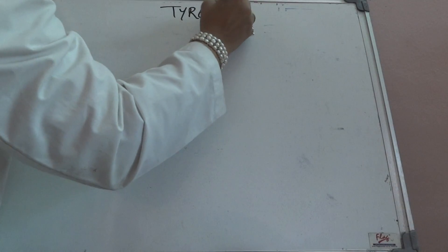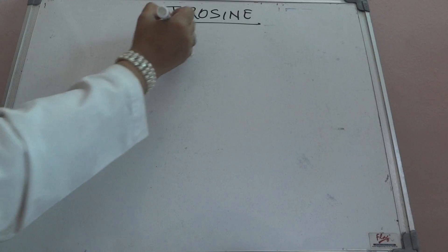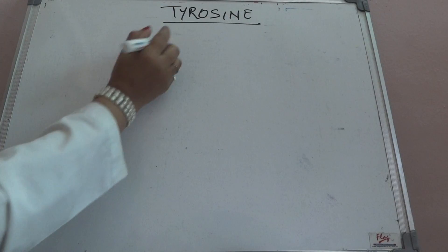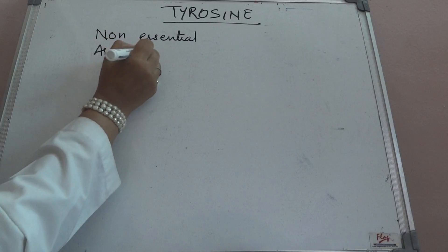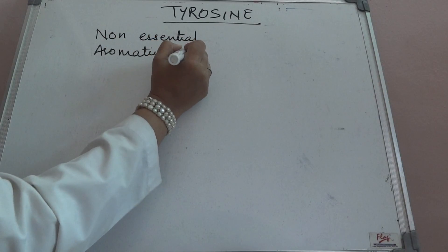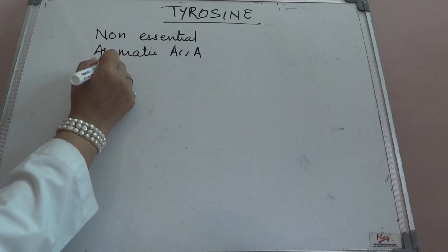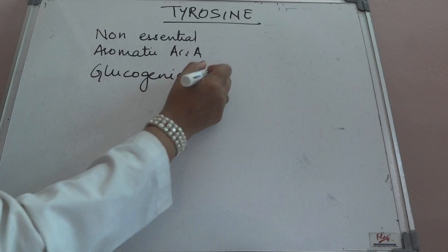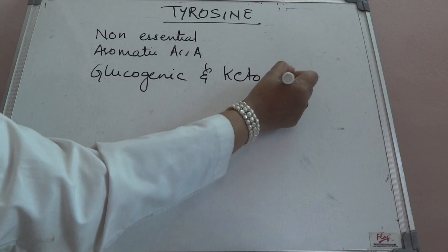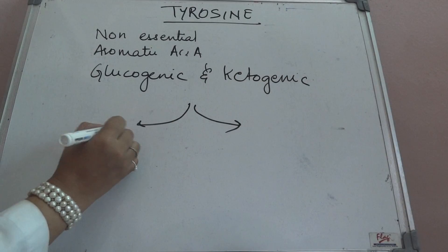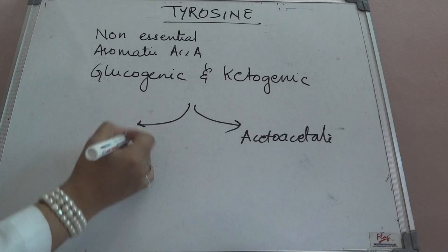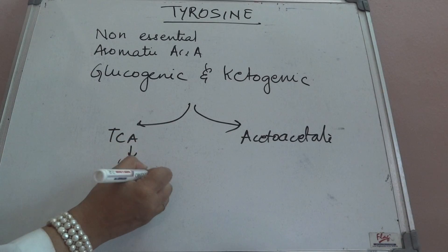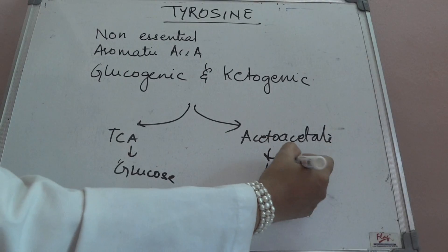Hi everybody, today we discuss tyrosine metabolism. We have already discussed tyrosine metabolism in relation to the synthesis of epinephrine and norepinephrine. Tyrosine is a non-essential aromatic amino acid, and it leads to the formation of glucose — it is glucogenic — as well as ketogenic. The crux of this pathway is that in the end we have two splits: where it enters the TCA cycle and where it forms acetoacetate, making it ketogenic.